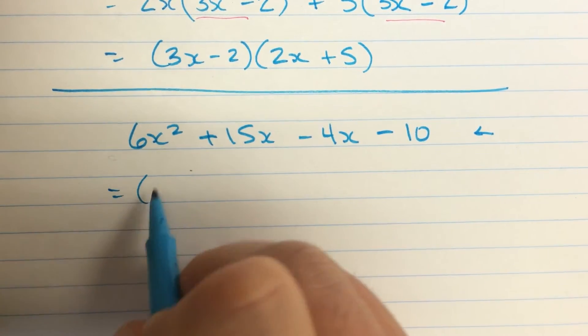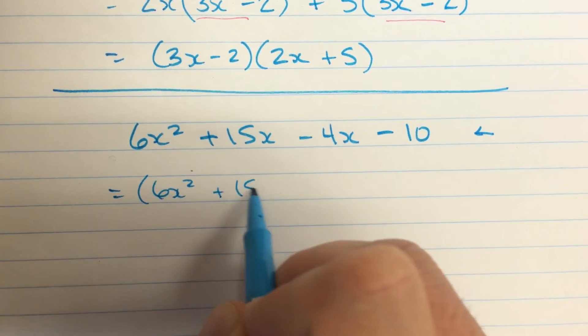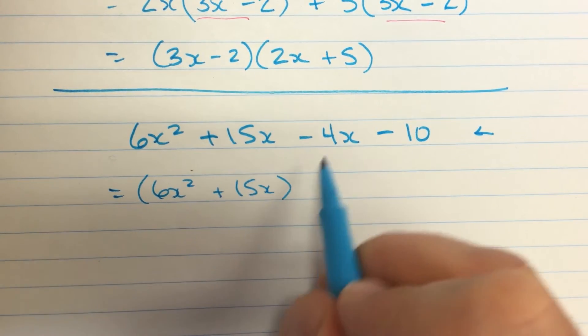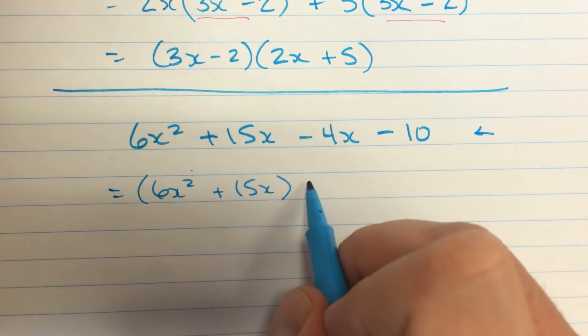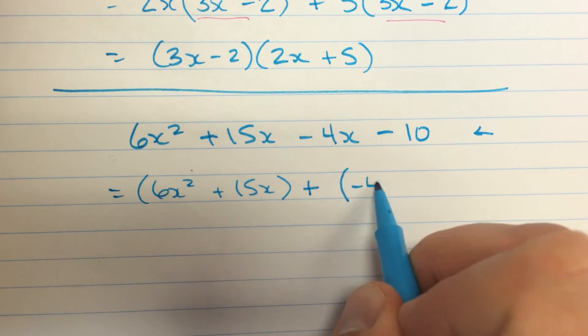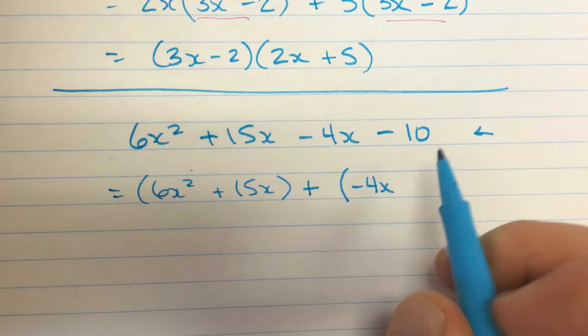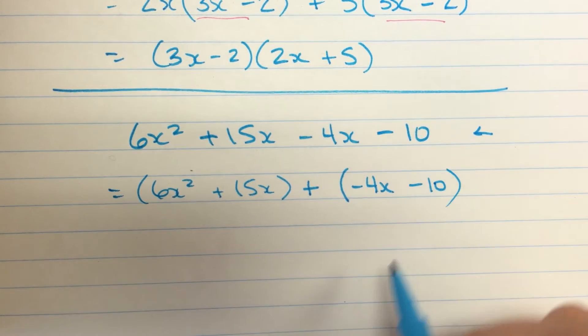I'll do the same kind of grouping. 6x squared plus 15x. There's a minus sign here. I'm going to be really careful. I'm going to add bracket negative 4x. See, I still got that negative sign. I was just careful about where I put it. And minus 10.